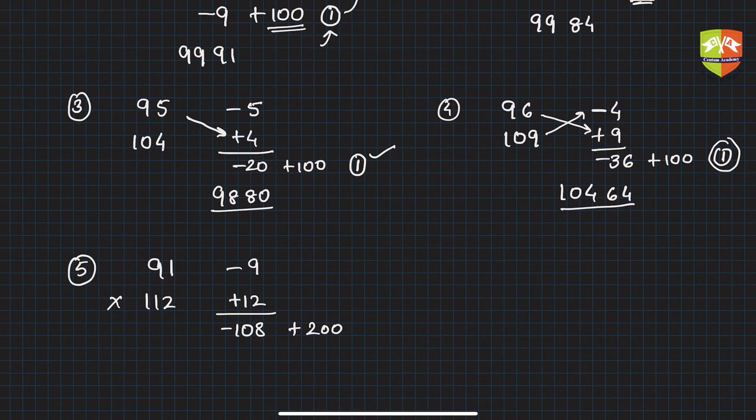If you add 200, you'll get 92. These become the last two digits of the product. But since you added 200, keep 2 here. Now do the same process: 112 minus 9 is 103, but take away this 2, so 101. This is the product.